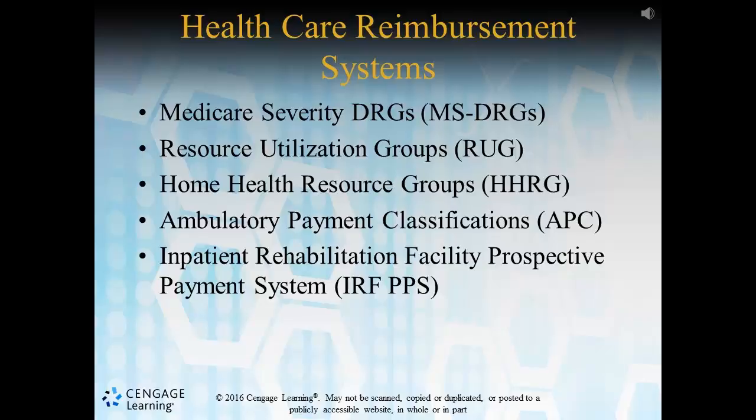Ambulatory payment classifications came to us in 2001, with prospective payment systems calling for ambulatory payment classifications. Payment rates are established for each APC, and some hospitals are paid for more than one APC per encounter, obviously at a discounted rate.